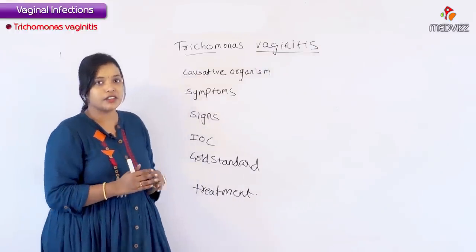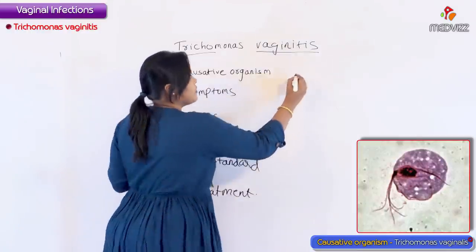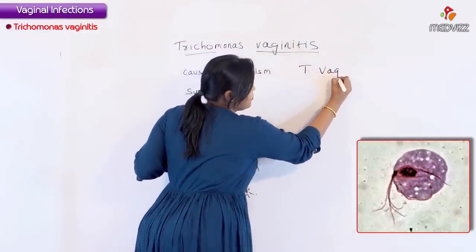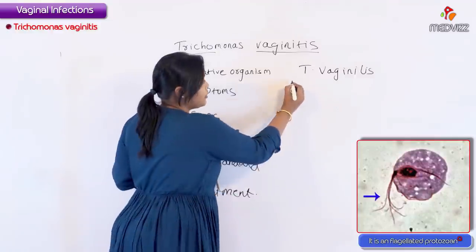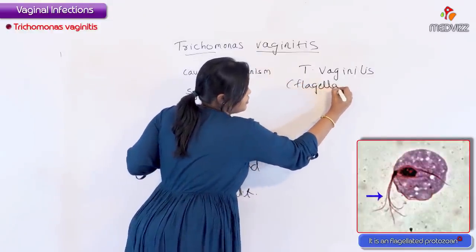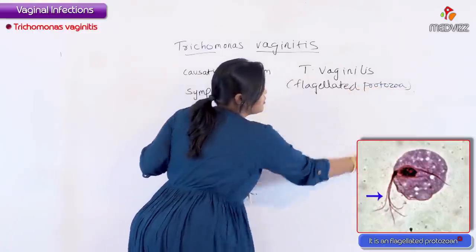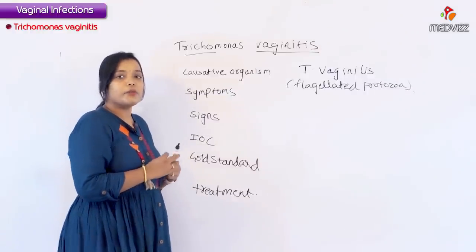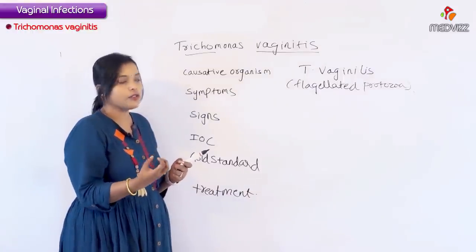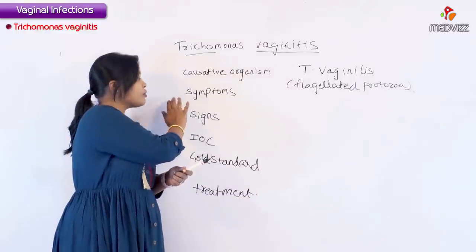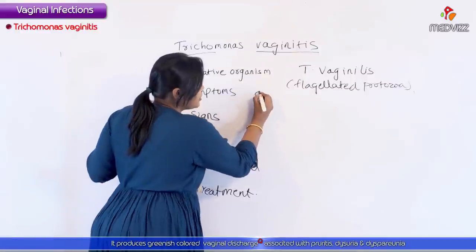Starting with trichomonas vaginitis, the causative organism is Trichomonas vaginalis, which is a flagellated protozoa. As a gynecologist, and for MCQ purposes, you should know the characteristic symptoms by which you can identify the infection. The symptoms it produces include greenish color discharge.